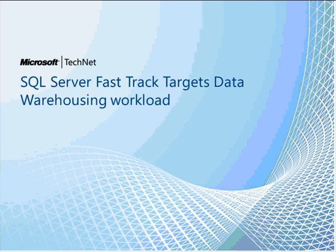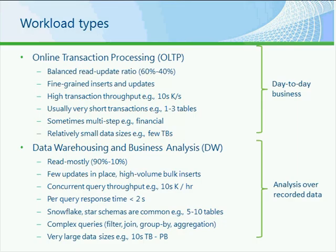Therefore, we've introduced something called the SQL Server Fast Track data warehousing model. It focuses on a workload type for data warehousing versus the OLTP workload type. OLTP, or Online Transaction Processing systems, generally have a balanced read-update ratio of about 60% read to about 40% update. They're very fine-grained inserts and updates—if you think about any ERP system, there's an update of a single record for a customer or a transaction for an item sold.